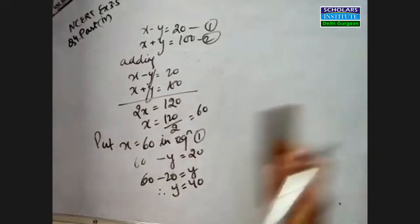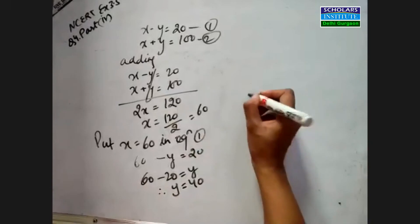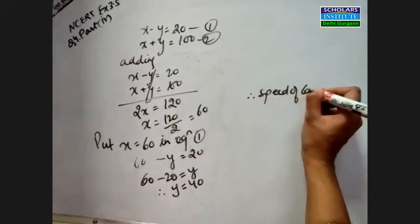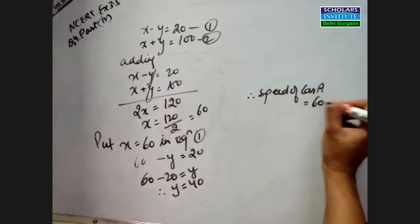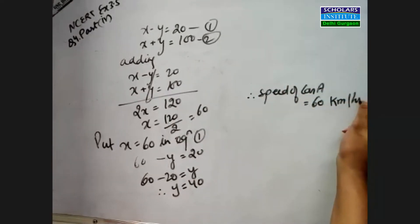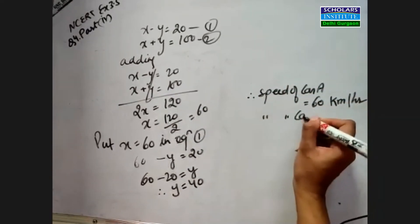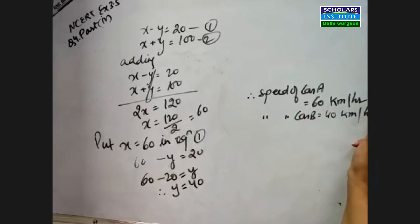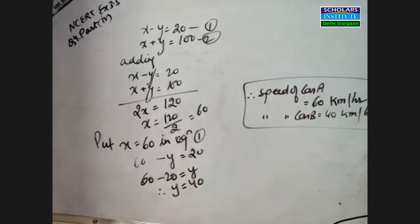We don't give our answer as just x equals 60, y equals 40. For a word problem, the answer is given in words. Therefore, the speed of car A is 60 kilometers per hour, and the speed of car B is 40 kilometers per hour. This is how we solve this question, and this is a very important question as well.